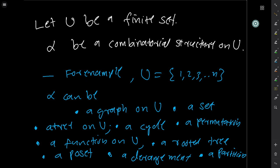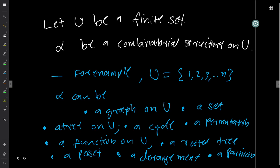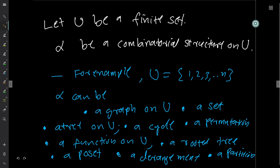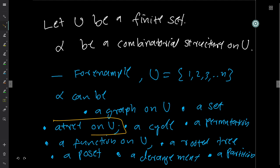The construction can be many things. Given a finite set U, you can put a set structure on the set itself, a tree structure on the set, or you can take this and make a tree by putting edges. You can make a cycle by putting elements in some order and connecting the edges. You can make a permutation.